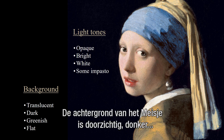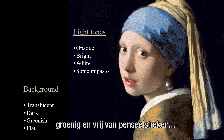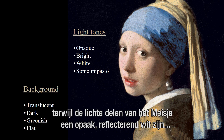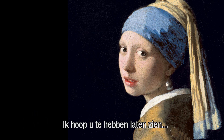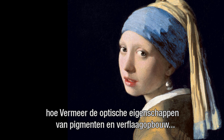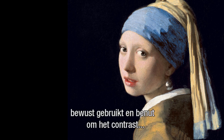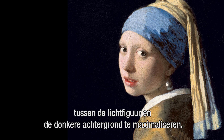To summarize, the girl's background is translucent, dark, greenish, and free of brushwork, whereas the light parts of the girl are made up of an opaque, reflective white containing some impasto in the brightest area — the girl's collar. I hope to have shown you that Vermeer deliberately uses and exploits the optical properties of pigments and paint layer buildup to maximize the contrast between the light figure and the dark background.